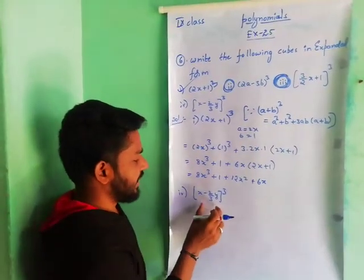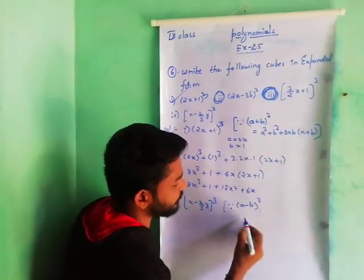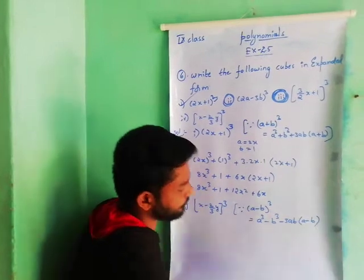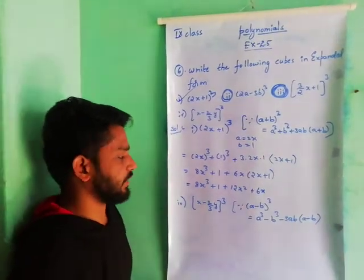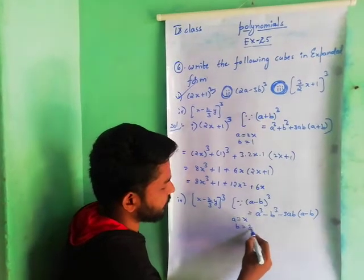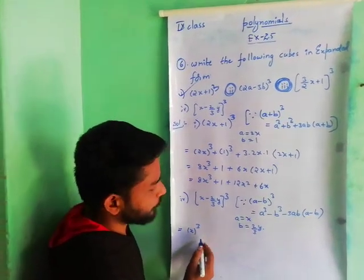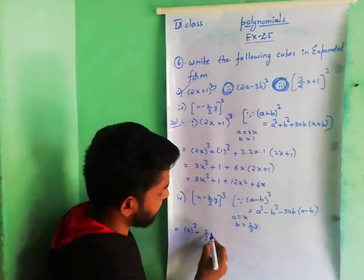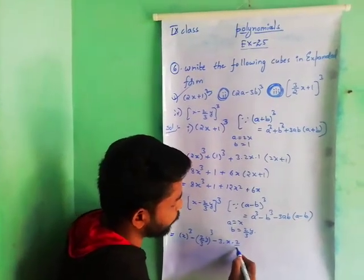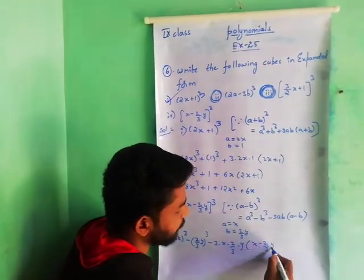I am coming to the fourth one: (x - 2/3 y) whole cube. It looks like (a - b) whole cube. The formula is: a cube minus b cube minus 3ab into (a - b). Here a value is x, b value is 2/3 y. So substituting: a cube means x cube, b cube means (2/3 y) whole cube, minus 3ab means 3 into x into 2/3 y, into (x - 2/3 y).